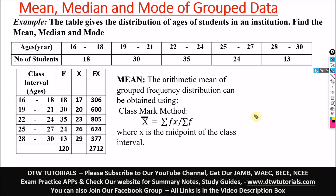Hello guys and welcome to DTW Tutorials. In today's video we're going to be looking at how to calculate the mean, median and mode of grouped data. We have a question here — the table gives the distribution of ages of students in an institution; find the mean, median and mode.